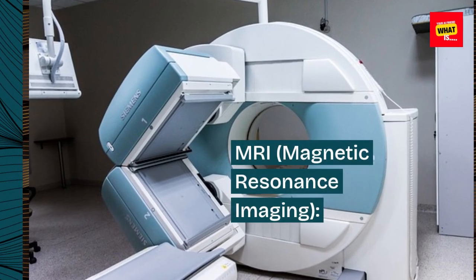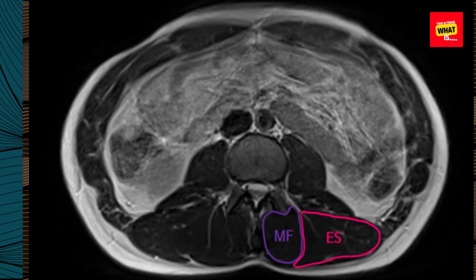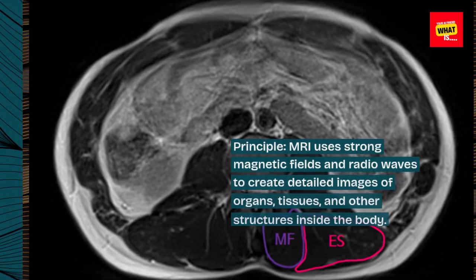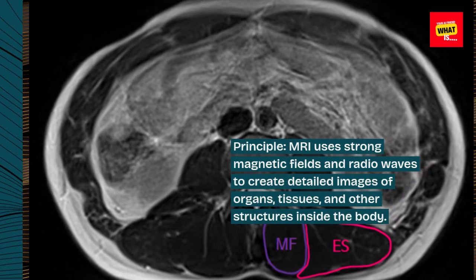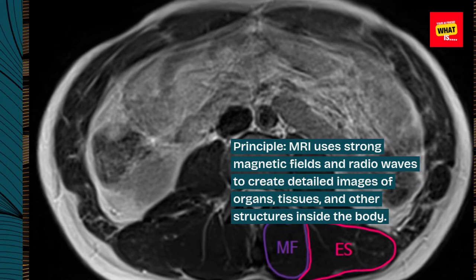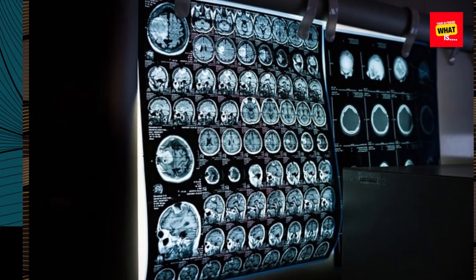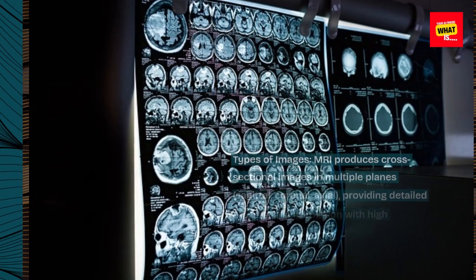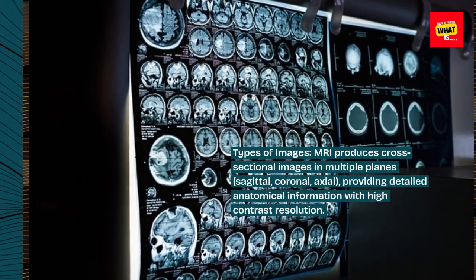MRI — Magnetic Resonance Imaging. Principle: MRI uses strong magnetic fields and radio waves to create detailed images of organs, tissues, and other structures inside the body. Types of Images: MRI produces cross-sectional images in multiple planes,